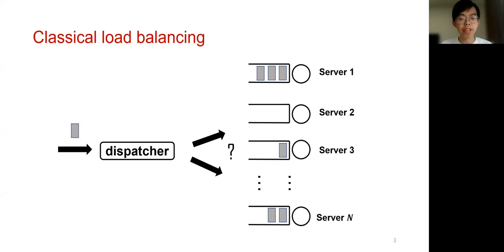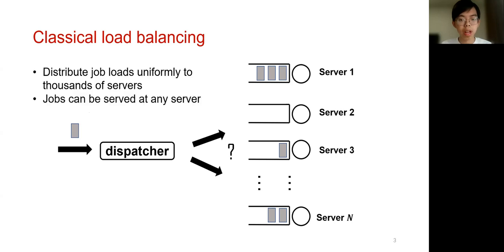In today's application, the cloud platforms need to tackle about millions of job submissions every day. These jobs are served by tens of thousands of servers in data centers. To support this need, one critical component is load balancing. In the classical model of load balancing, there is a dispatcher responsible for dispatching each incoming job to one of the servers in order to get the job finished.